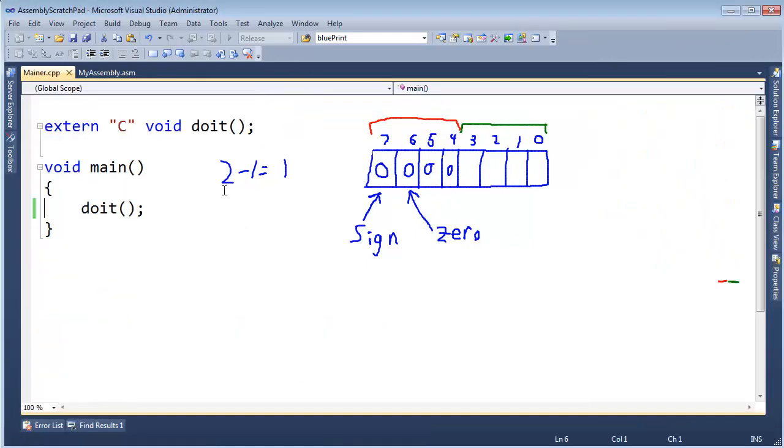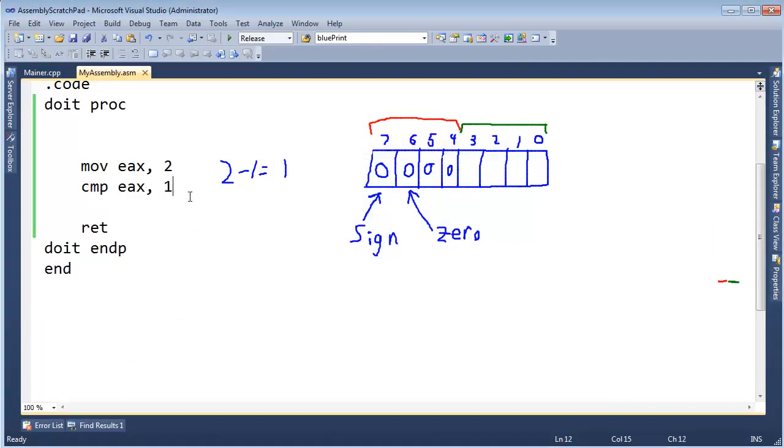Let's do one more example. Let's do 2 minus 2. What do you think the result of the two bits here? The sign bit and the 0 bit will be when I do a 2 minus 2. I'm going to pause the video and do some erasing.